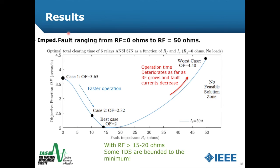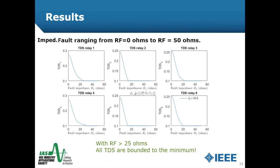We checked the general performance of the objective function from zero impedance up to 50 ohms. Starting from case one, the objective function decreases, reaching faster operation until it breaks in the range of 20 to 50 ohms. After that, the operation time deteriorates as fault resistance grows, meaning some TDS values are bounded to their minimum. This is also shown for the performance of each of the TDS values of the six relays across the 0 to 50 ohm range.